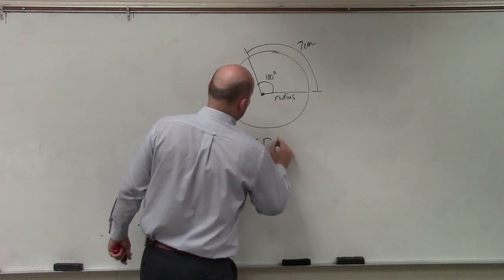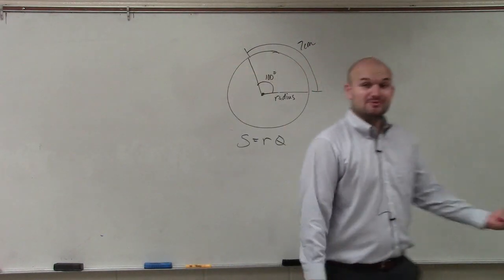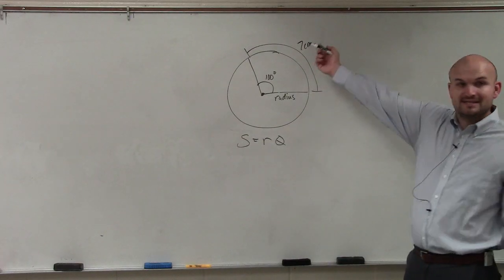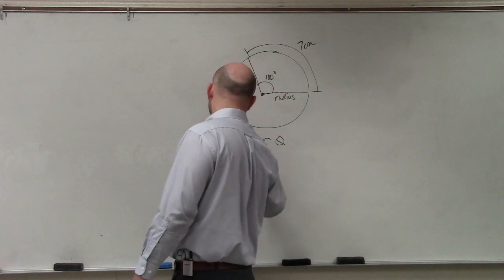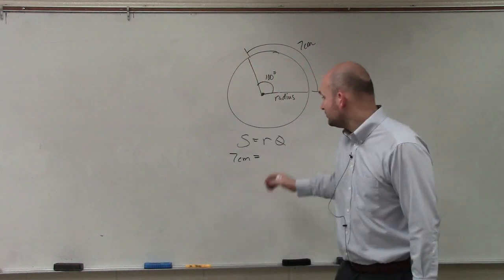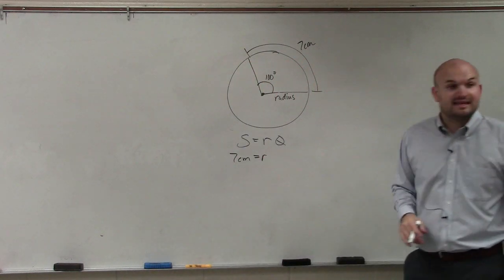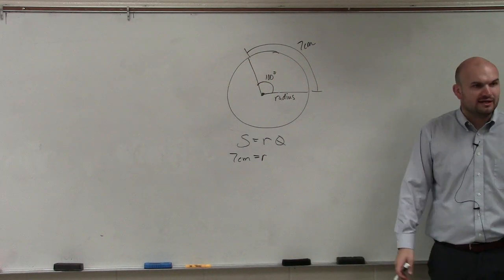S equals r times theta. S represents the arc length. They tell you what the arc length is, 7 centimeters. We don't know what the radius is. And then they do give us theta. But what do they give us theta in again?